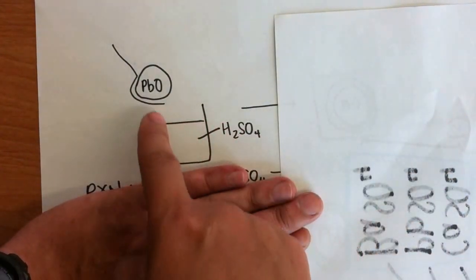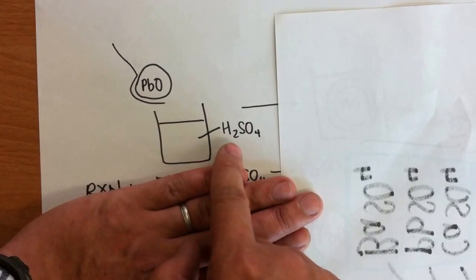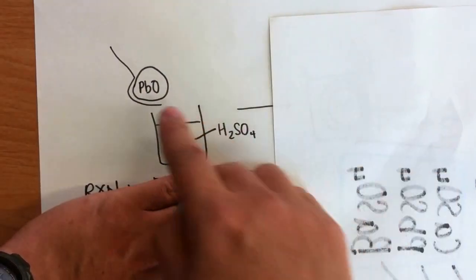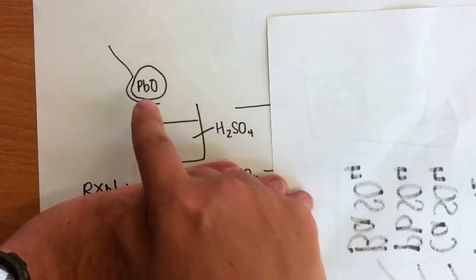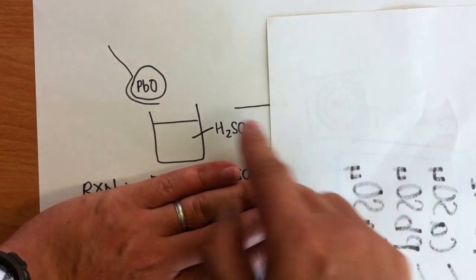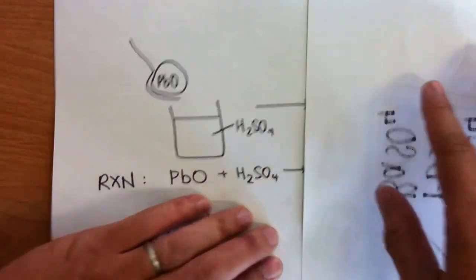If we use a normal method, example PbO, a metal oxide and an acid, what happens is PbO will react with H2SO4, you will get PbSO4 plus H2O, means salt plus water, but the complication comes in this form.